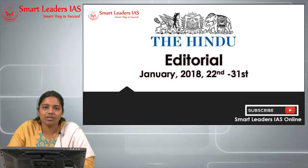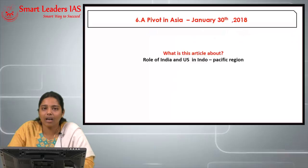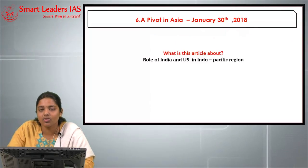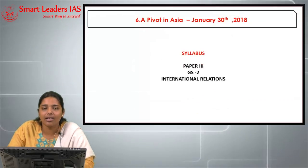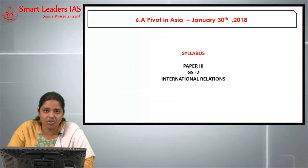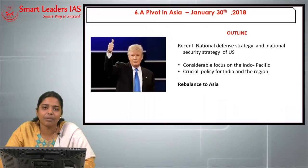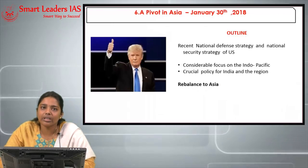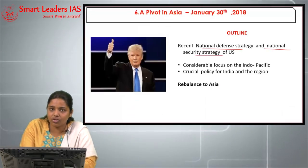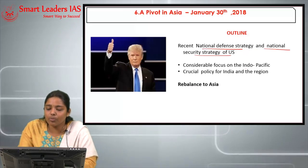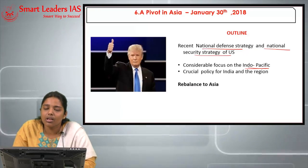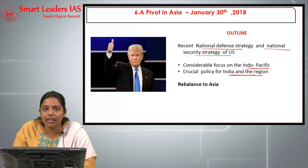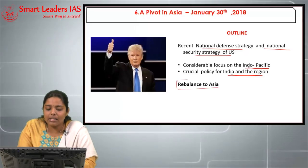The next article came on January 30th — 'A Pivot in Asia' — about the role of India and the US in the Indo-Pacific region. It is a modified version of Obama's Pivot to Asia. In 2011, Obama introduced a Pivot to Asia policy with India as its linchpin; now under Trump's administration, a Pivot in Asia has been introduced again with India as its linchpin. The US National Defense Strategy and National Security Strategy both focus on the Indo-Pacific region — signalling America's return to the Indo-Pacific — and the policy invites India to join, essentially representing a rebalance to Asia.